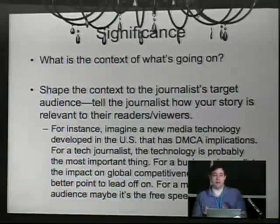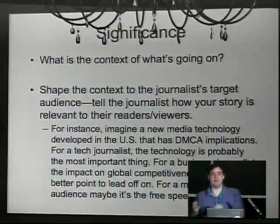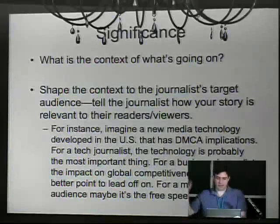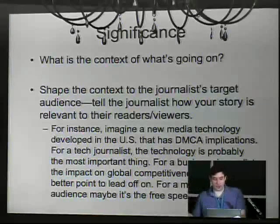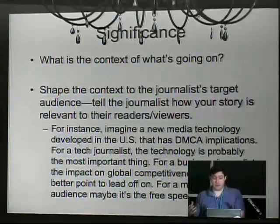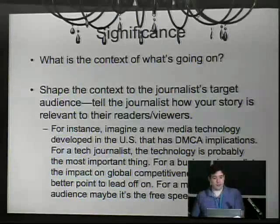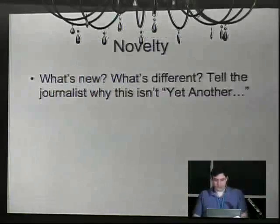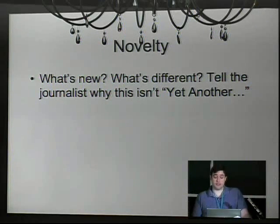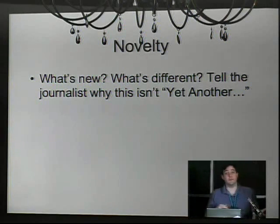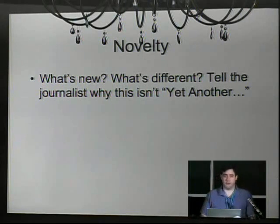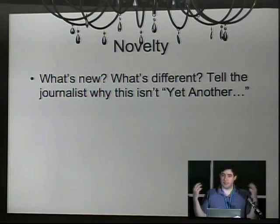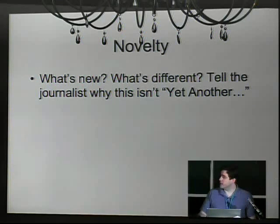You're only going to get one, two, or three points across to the journalist — think hard about what those are, and think about significance more than technical details. This idea of setting up significance and worrying about intelligent plot should inform everything you do in a media campaign: setting up media websites, writing press releases, choosing who to talk to, what to say in interviews. As for novelty, because you're developing new technology this is actually the easiest part — but you need to tell them what's new, what's the twist, what's the angle, what's the importance.